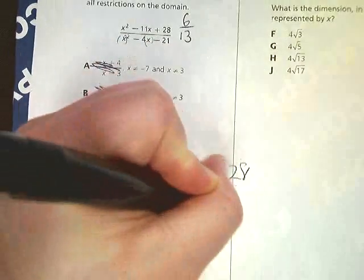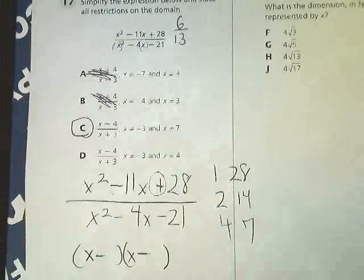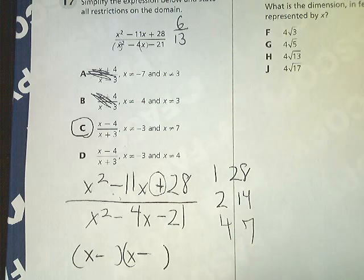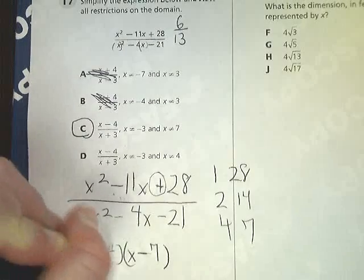1 and 28, 2 and 14, 4 and 7. Well, there's no situation where I can add 2 and 14 and get 11. It just doesn't happen. So the only one that's going to give it to me is 7 and 4. So I'm going to put 7 here and 4 here.